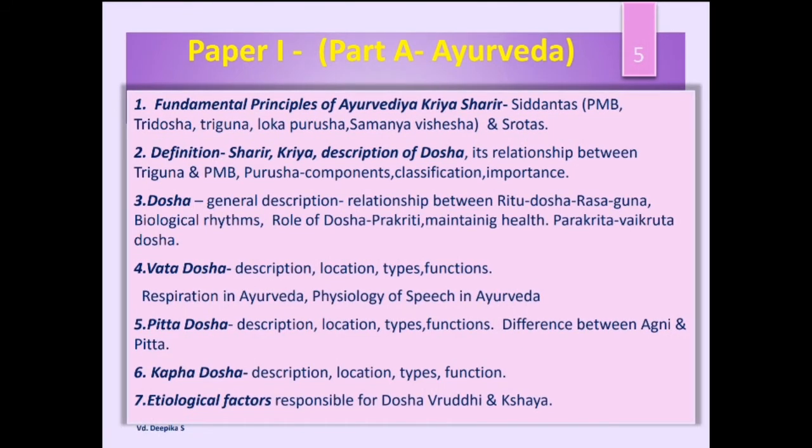Under the Ayurveda portions of Paper 1, we are going to study most of the basic principles of Kriyasharira — like the fundamental principles, Siddhantas, Panchamahabhuta Siddhanta, Tridosha, Triguna, Lokapurusha, and Samanya-Vishesha Siddhantas. Along with that, Srotas will also be dealt with. Next, we will study the definition of Sharira (human body) and Kriya, and the description of Doshas and their relationship with Trigunas and Panchamahabhutas. Then we study the detailed descriptions of Tridosha — Vata, Pitta, and Kapha — including definition, location, properties, and functions.